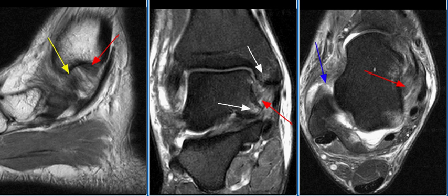Deltoid ligament injuries are rarely isolated and are associated with ankle fractures, abduction, external rotation, anterior deltoid injury, or avulsion injuries.